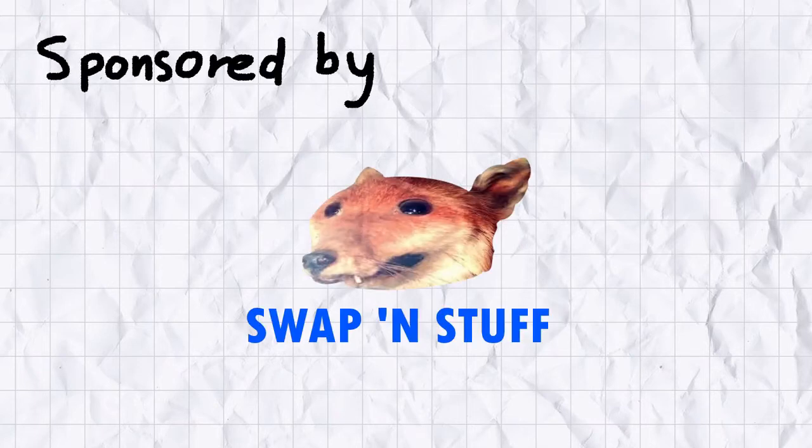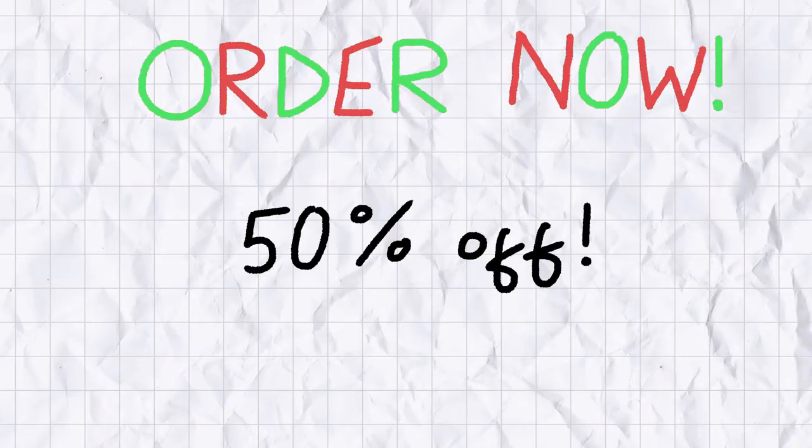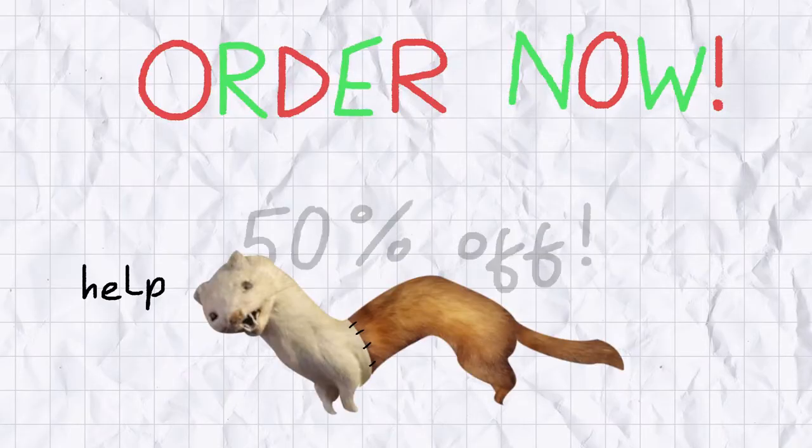This episode of Tape Facts is brought to you by Swap'n Stuff, the first taxidermy kit for children 6-10. Order now and get 50% off the rodent of your choice. Front or back. Choose quickly now, children.